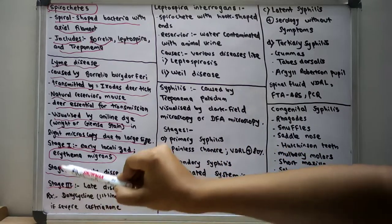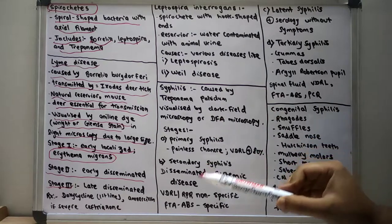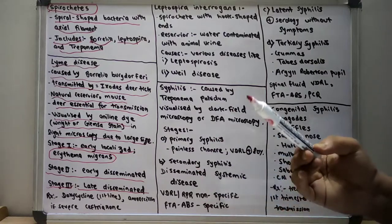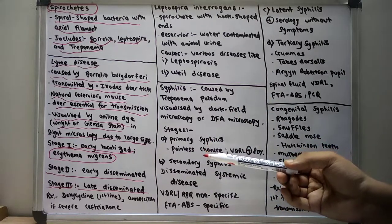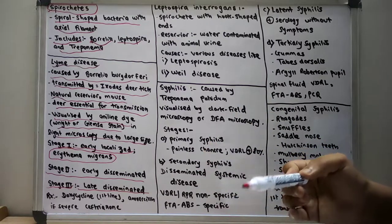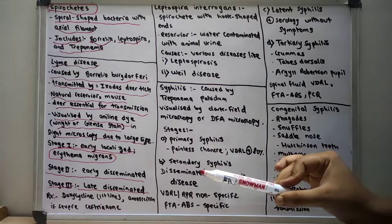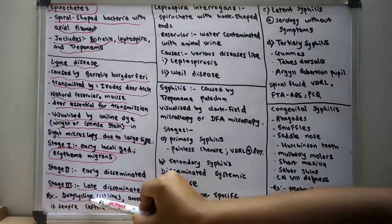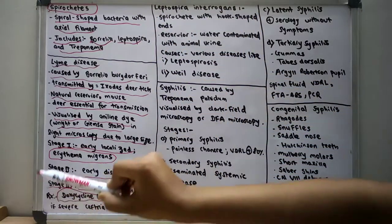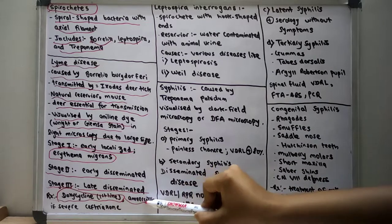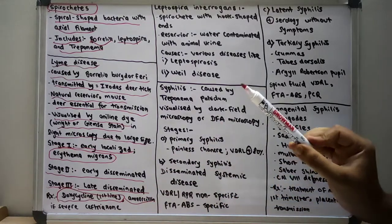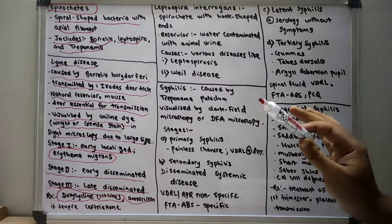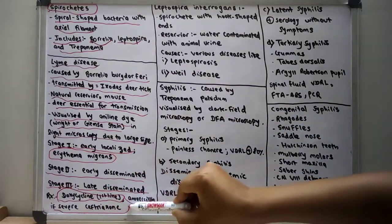In stage three, the late disseminated stage, there is presence of encephalopathy and chronic arthritis. Regarding treatment, doxycycline is the first-line drug for Lyme disease. Amoxicillin can also be used, and if the condition is severe — such as with encephalopathy — ceftriaxone can be given.